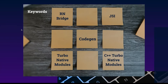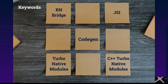So let's talk about the keywords first, so that we will have a better understanding about what we are talking about. First of all, we have the React Native Bridge, which is the existing communication bridge. JavaScript Interface is the new communication channel. CodeGen is the tooling that we will use to implement the communication channel. And we have TurboNative Modules and C++ TurboNative Modules.